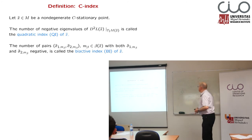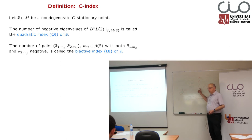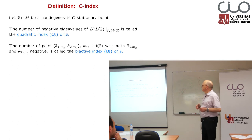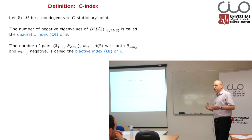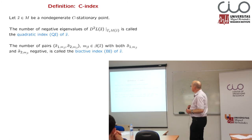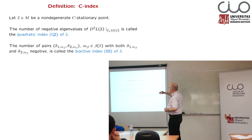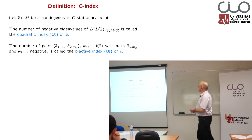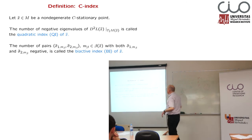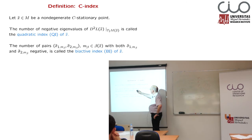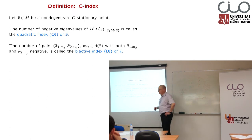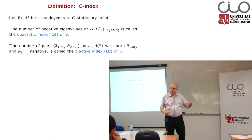C-index refers to the dimension of the Q-cell. Remember that in classical Morse theory and in finite optimization, it was equal to the number of negative eigenvalues of the restricted Hessian. Now another thing comes into play. We define: let X-bar from M be a non-degenerate C stationary point. We call, as usual, the number of negative eigenvalues of the restricted Lagrangian restricted to the tangent space the quadratic index, as in the literature.